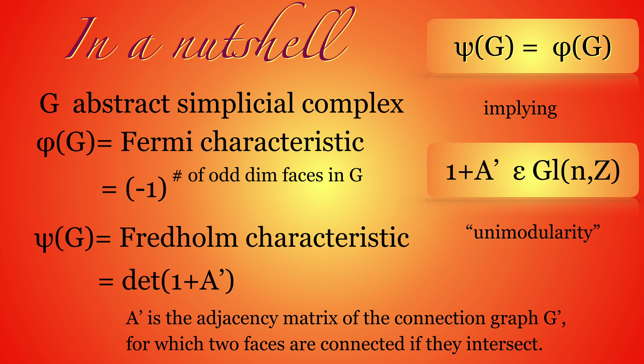Let G be a finite abstract simplicial complex. This means it's a finite set equipped with a set of non-empty subsets closed under the subset operation. The theorem tells that two numbers agree.